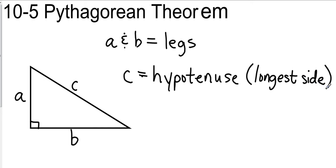Okay, the hypotenuse is the longest side. So the actual Pythagorean Theorem is this: C squared, which is the longest side squared, equals A squared plus B squared. So we square the legs, add them together, and that will equal the hypotenuse squared.